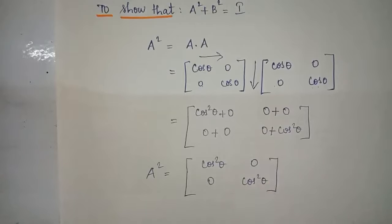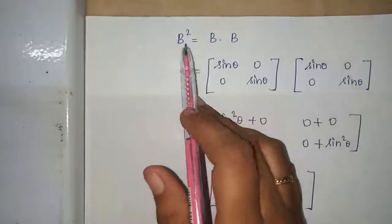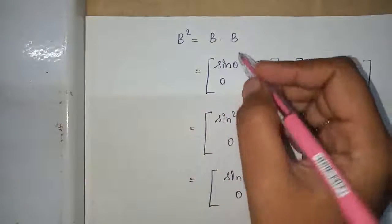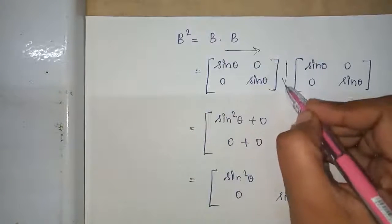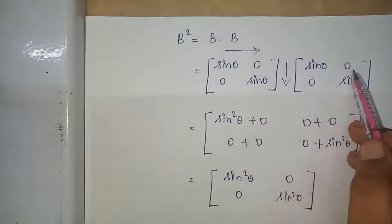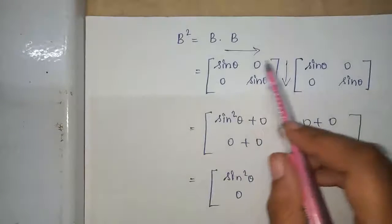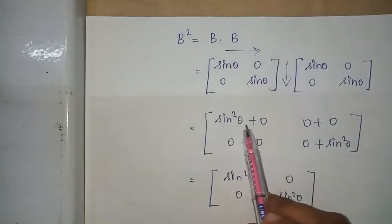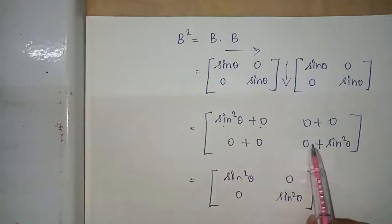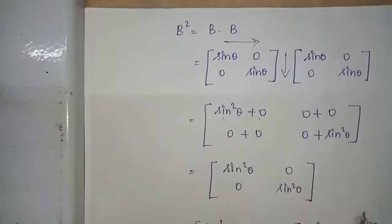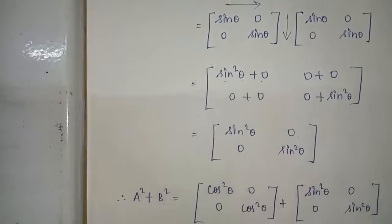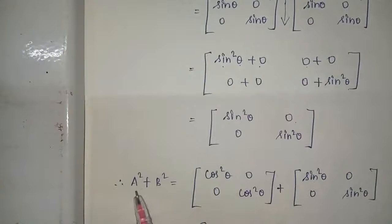Similarly, find the B squared value. B squared equals B into B. The matrix of B is sin theta 0 0 sin theta, again sin theta 0 0 sin theta. First row first column is sin squared theta plus 0, 0 plus 0, 0 plus 0, 0 plus sin squared theta, which gives sin squared theta 0 0 sin squared theta.